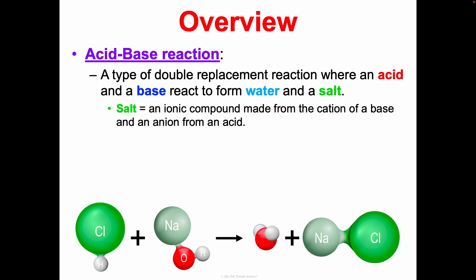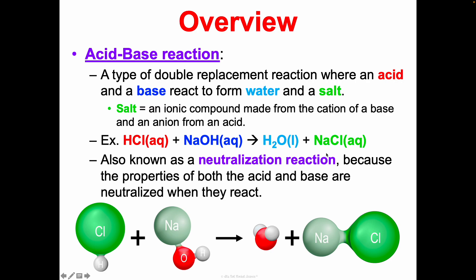So a reminder, a salt is an ionic compound made from the cation of a base and an anion from an acid. Here was an example equation we saw, and I kind of color-coded this, where you have your hydrochloric acid, your sodium hydroxide, and it's going to make water and salt. And here's a picture of what that kind of looks like.